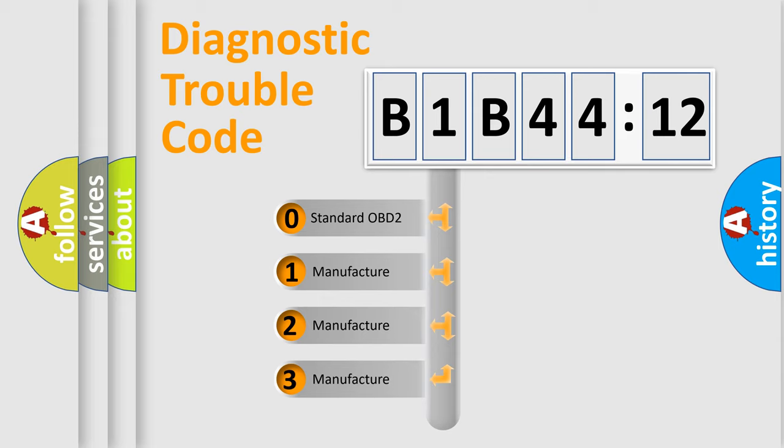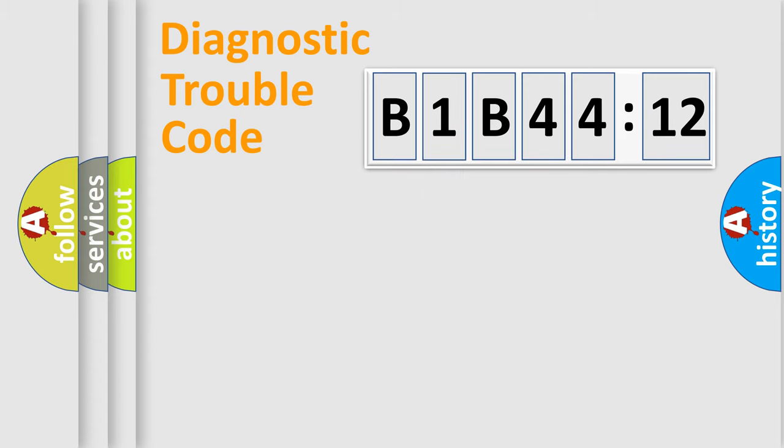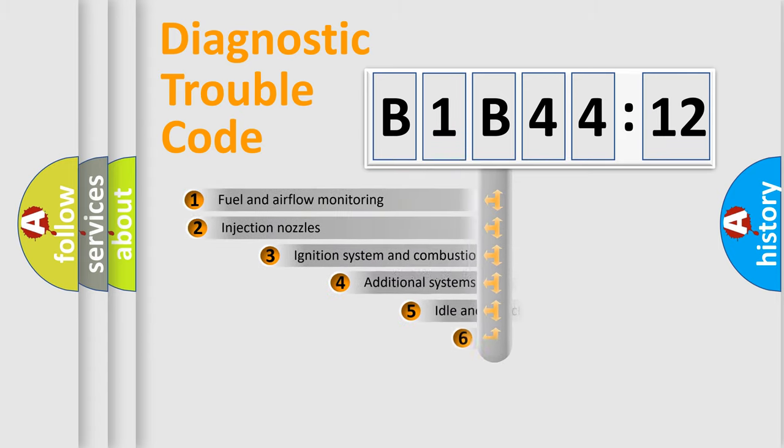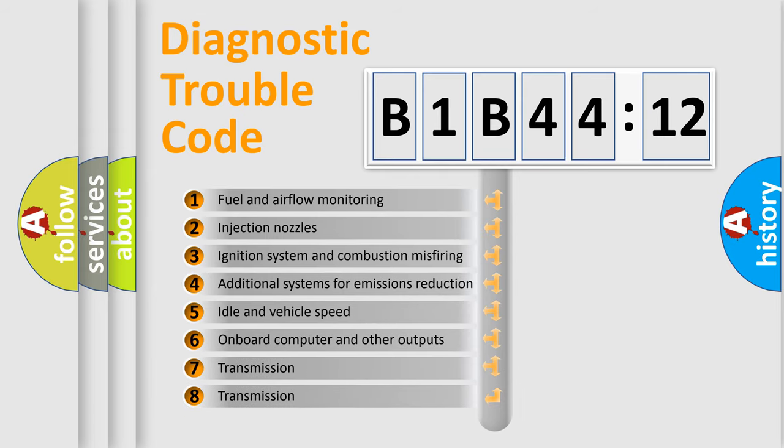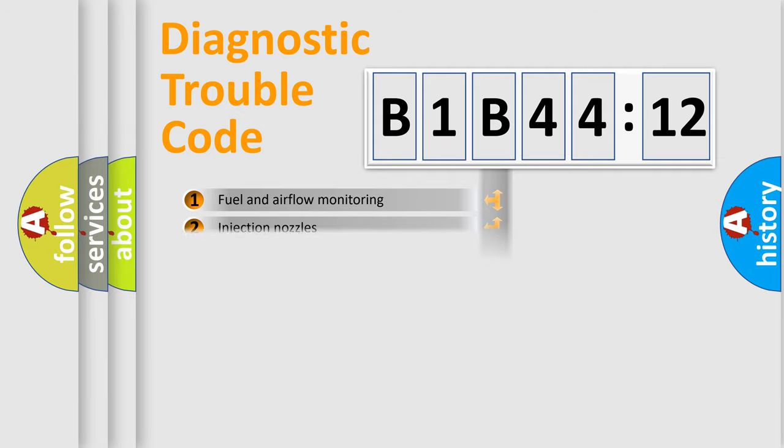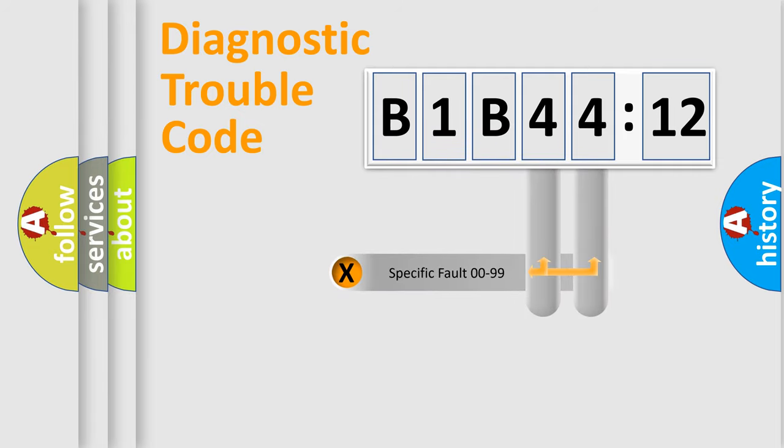If the second character is expressed as zero, it is a standardized error. In the case of numbers 1, 2, 3, it is a manufacturer-specific error. The third character specifies a subset of errors. The distribution shown is valid only for the standardized DTC code. Only the last two characters define the specific fault of the group.